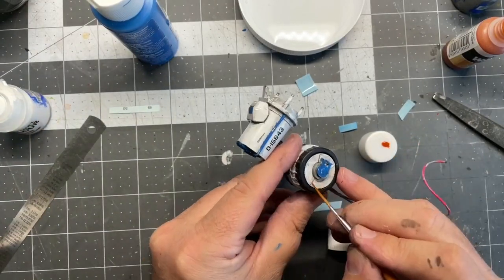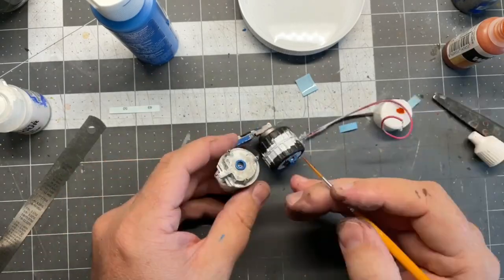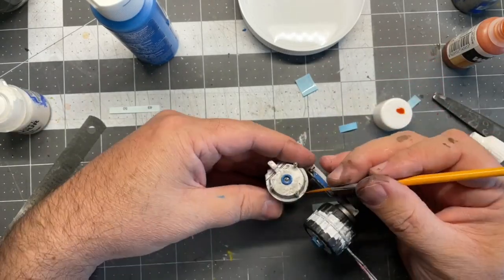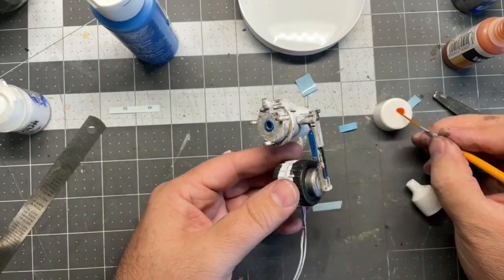And I'm using some Vallejo rust here. And this is just adding a little bit of dimension to it. And just it's kind of just the finishing touches.